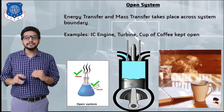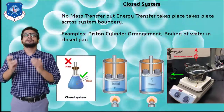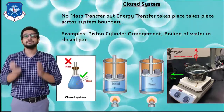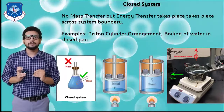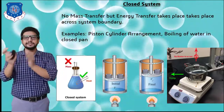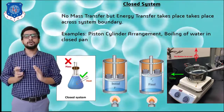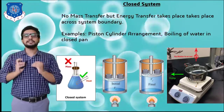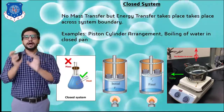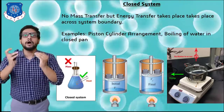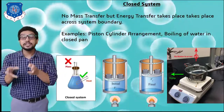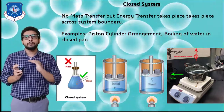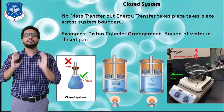The next type is a closed system, in which there is no mass transfer but there can be energy or heat transfer between the system and surrounding. Examples are a piston-cylinder arrangement and boiling of water in a closed pan. As shown on screen, in the initial state of the piston-cylinder arrangement, heat energy is supplied; the mass remains constant but heat crosses the diathermic boundary, indicating energy interaction. In the closed pan case, energy transfer takes place but there is no mass transfer.